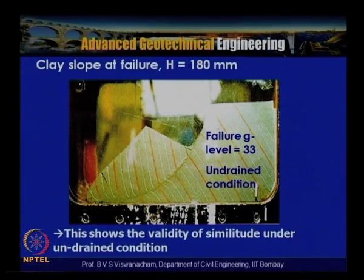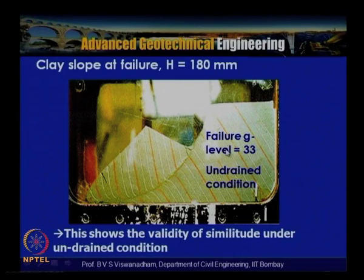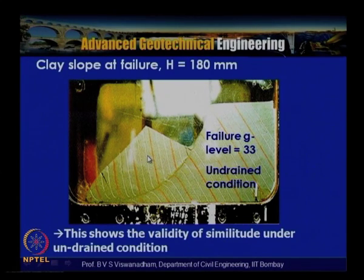This is a typical undrained test where the slope model height is about 18 centimeters (h = 18 cm). When the gravity level was increased to 33g, the slope underwent a slip circle failure, showing the validity of similitude under undrained conditions. This demonstrates the requirement of centrifuge physical model tests to induce failure. The critical height of the slope is 33 × 180 mm, giving the equivalent prototype height at failure.